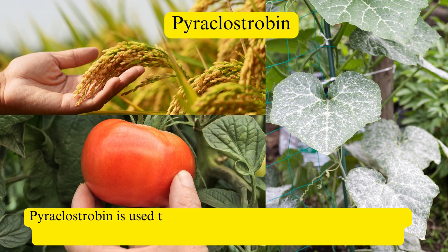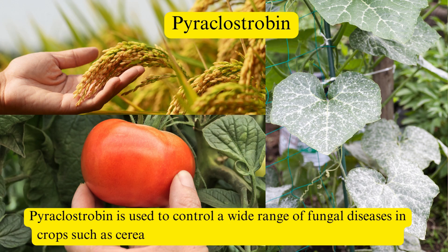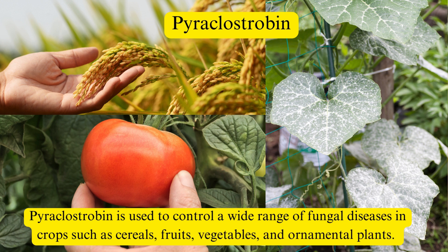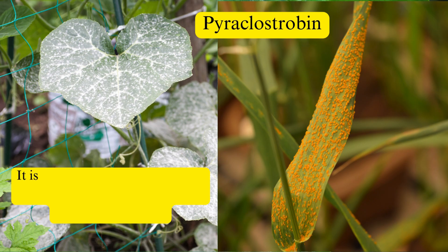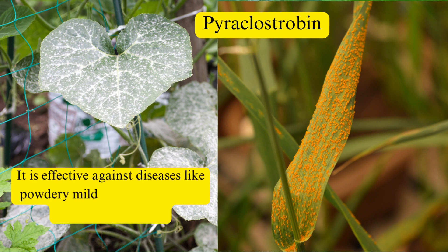Uses. Pyroclostrobin is used to control a wide range of fungal diseases in crops such as cereals, fruits, vegetables, and ornamental plants. It is effective against diseases like powdery mildew, leaf spot, rust, and downy mildew.